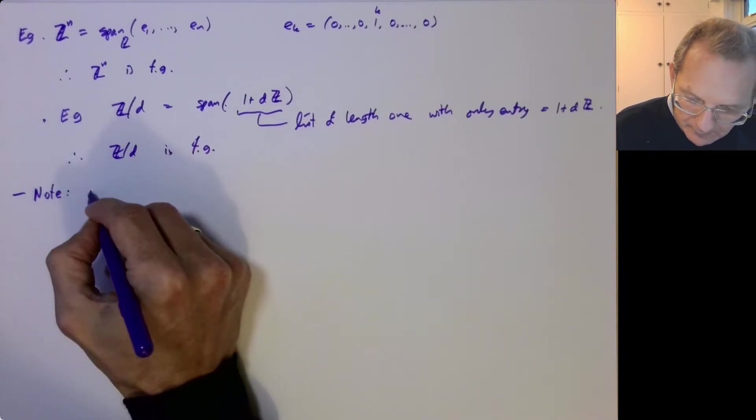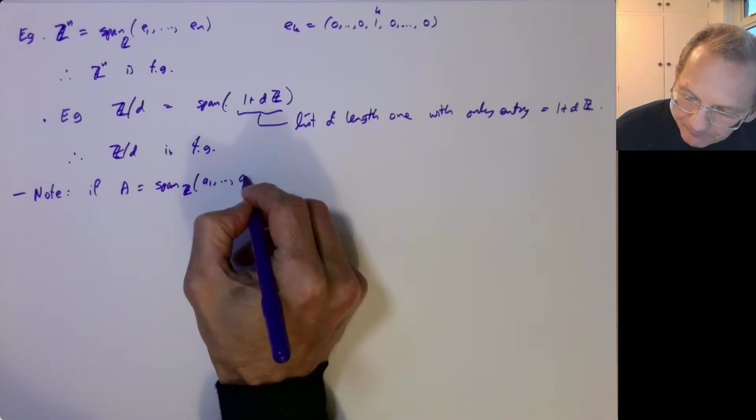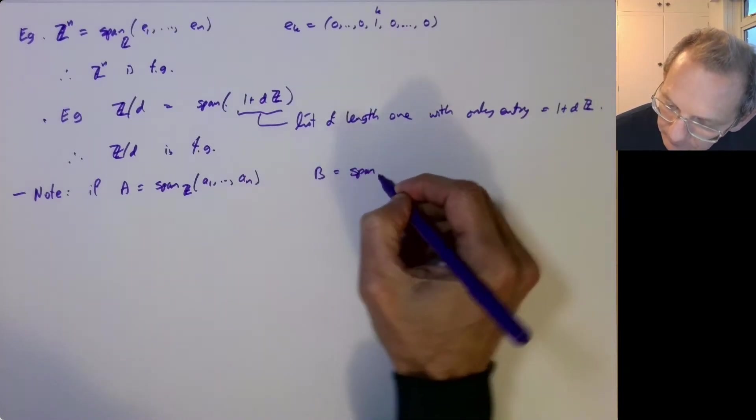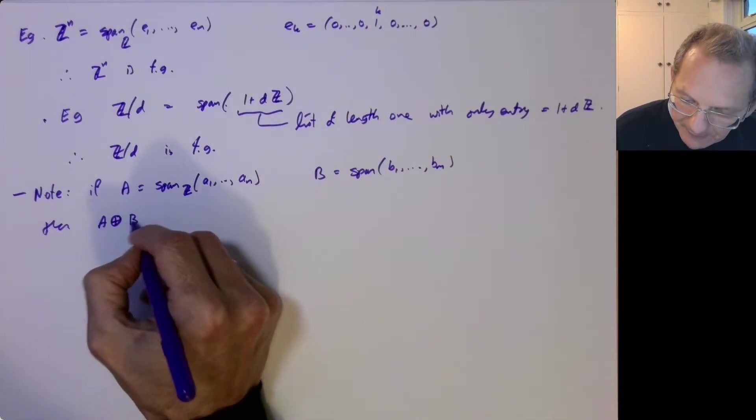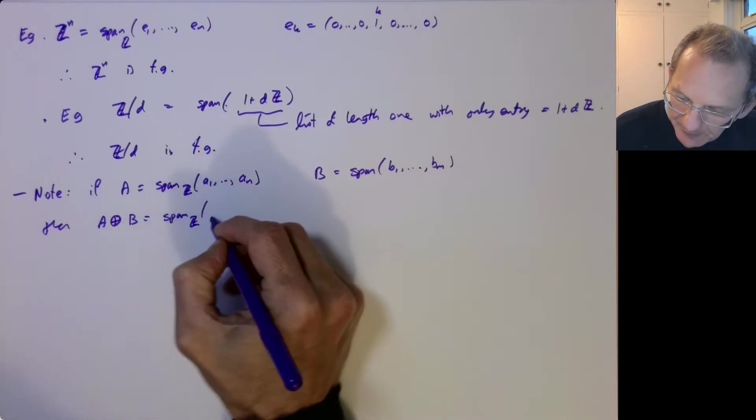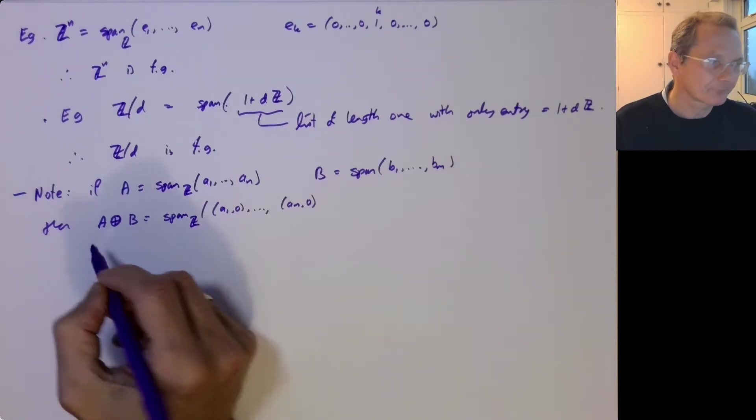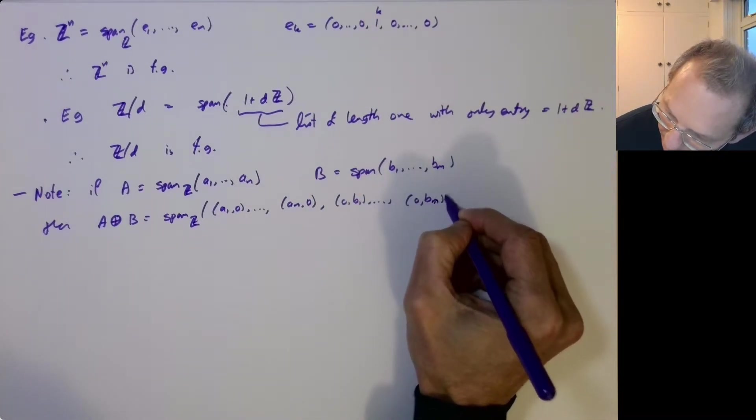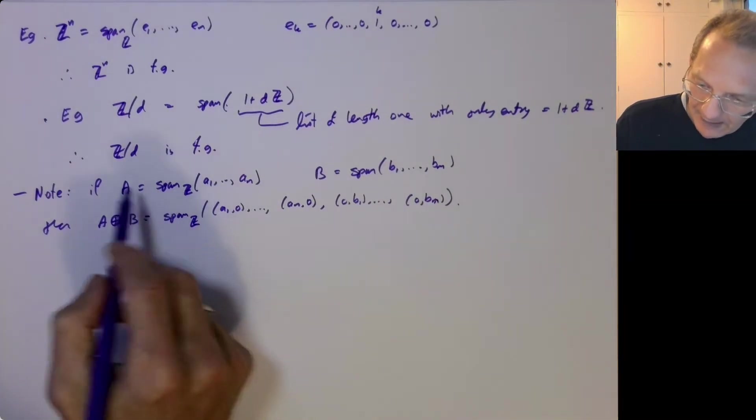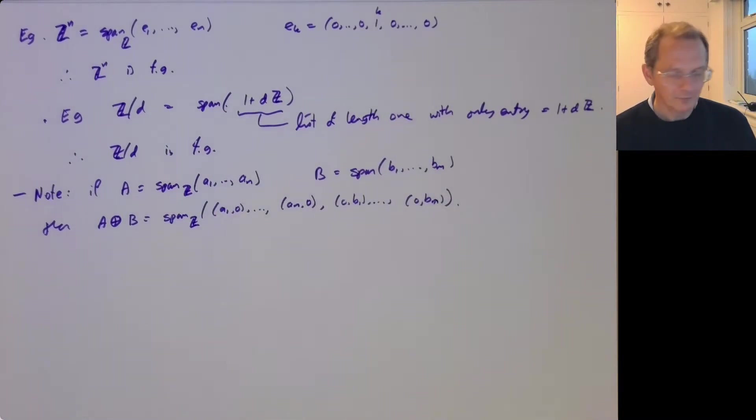And note, if A is the span of A1 up to AN, and B is the span of B1 up to BM, then it's pretty easy to see that A plus B is the span of the lists, these two lists combined in the obvious way. So you've got A1 comma 0 up to AN comma 0, those are all elements of this direct sum, and then also 0, B1 up to 0, BM. So it's kind of easy to see, we've got any element of A plus B is an element of A combined with an element of B. The first element you express as a linear combination of the A i's, the second one express as a linear combination of the B i's. You see that this list is going to span A plus B.